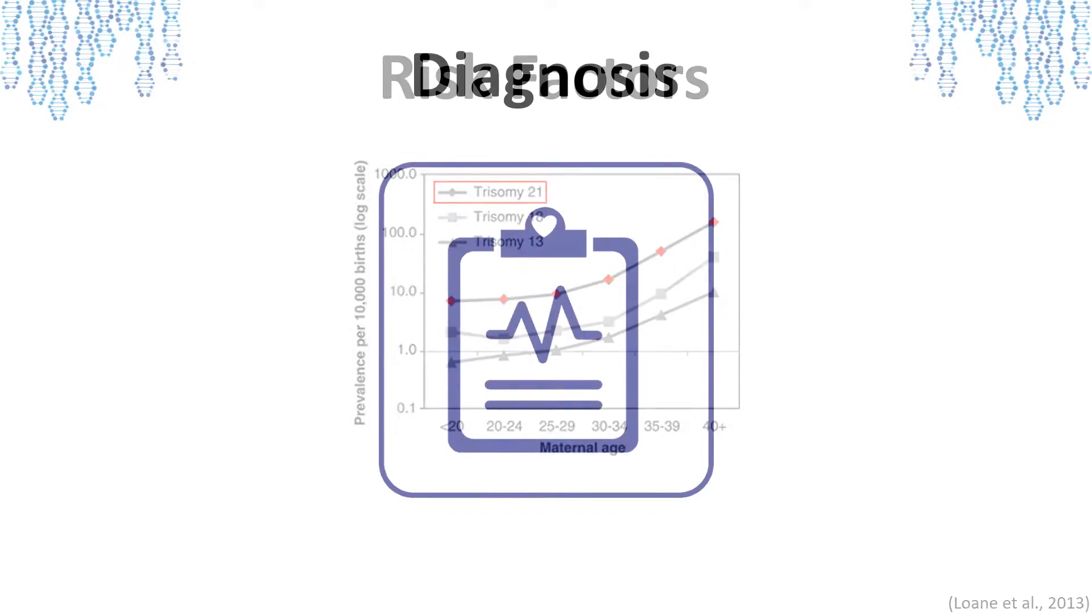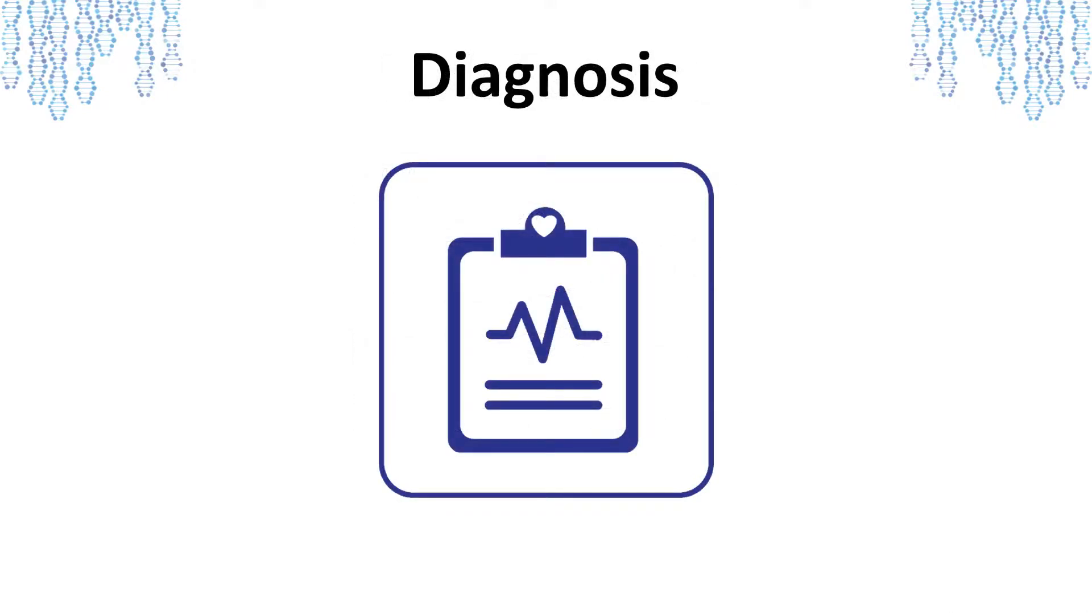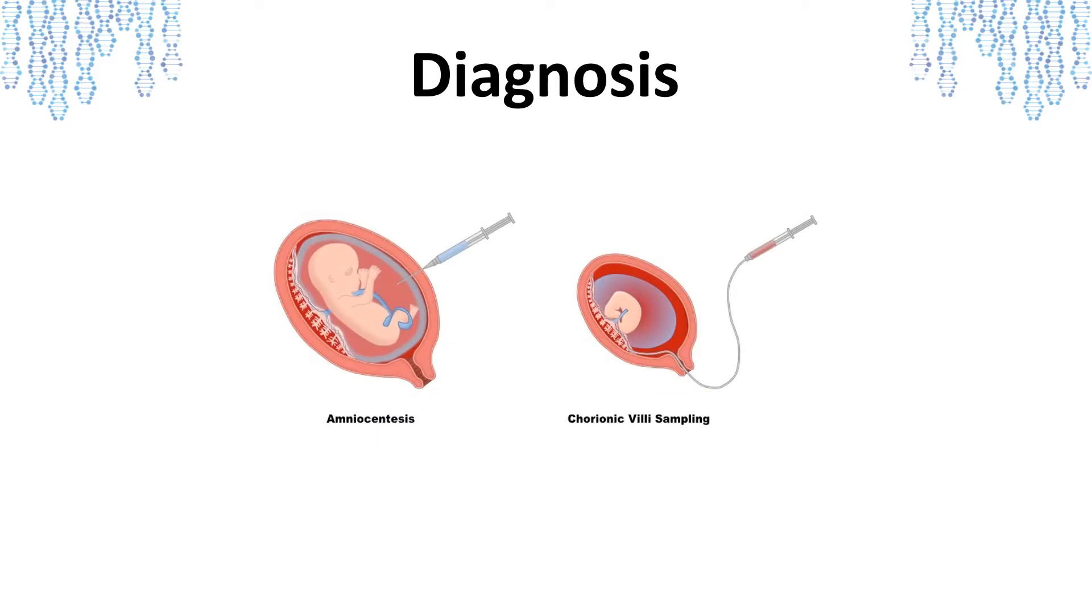In addition to risk factors, research continues to be done on diagnosis and treatments as well. There are several prenatal screening tests available that can look for markers suggesting the presence of Down syndrome. These include amniocentesis and chorionic villus sampling, which essentially analyze the pregnancy to check for those genetic markers.